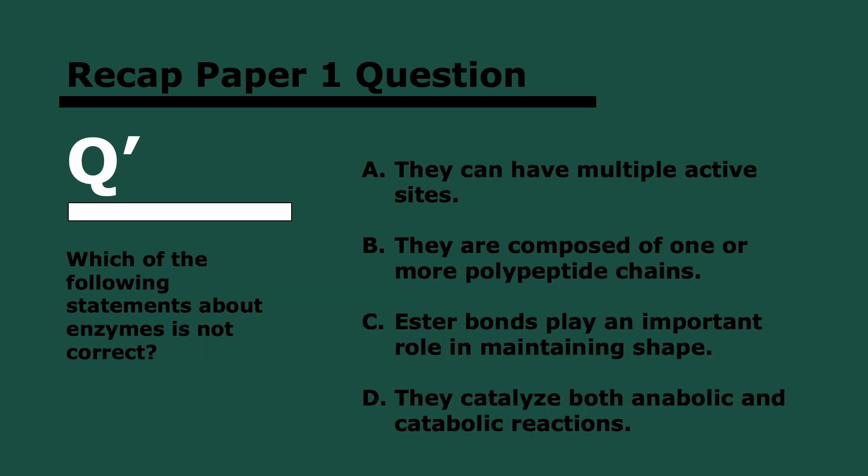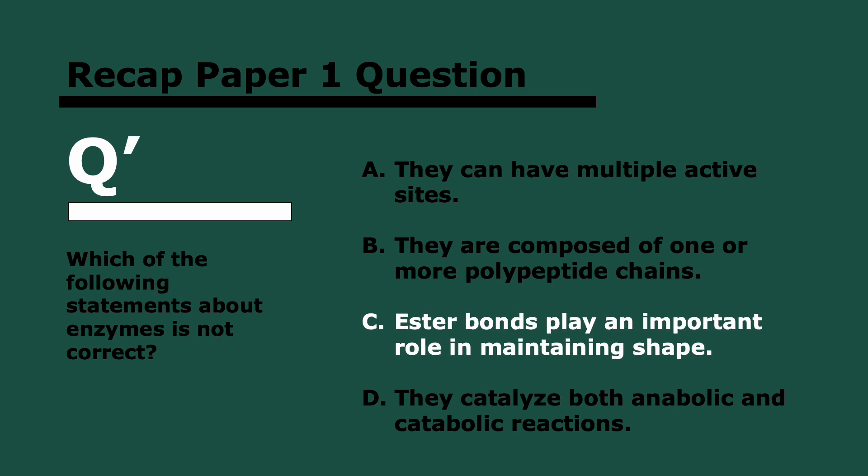And next and final question. Which of the following statements about enzymes is not correct? In three, two, and one. C. Why? Well, A, they can have multiple active sites. They can have an active site and an allosteric site. B, they are composed of one or more polypeptide chains. That is true. They can have a quaternary structure. They catalyze both anabolic and catabolic reactions. That's completely true. They catalyze almost all reactions in metabolism, including of course, anabolic and catabolic reactions. But ester bonds don't really play an important role in maintaining their shape. Ester bonds are not really found in proteins as much. And remember to maintain their shape, you want hydrophobic and hydrogen bonding.